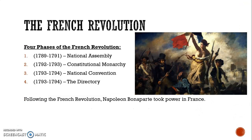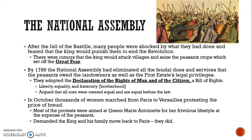The French Revolution is broken into four main phases: the National Assembly, the Constitutional Monarchy, the National Convention, and the Directory. Following the fall of the Bastille, many people feared the king would punish the peasants. This 'Great Fear' spread through villages. By 1789, the National Assembly had eliminated all feudal dues and services that peasants owed landowners, as well as the first estate's legal privileges. They adopted the Declaration of the Rights of Man and of the Citizen — essentially a bill of rights stating that men have the right to liberty, equality, and fraternity, and that all men are equal before the law.